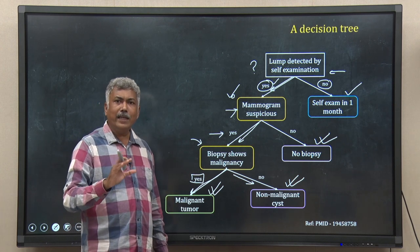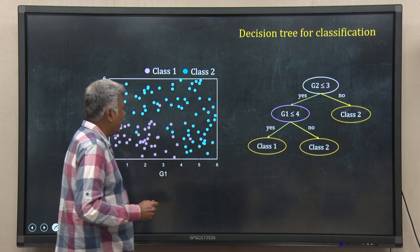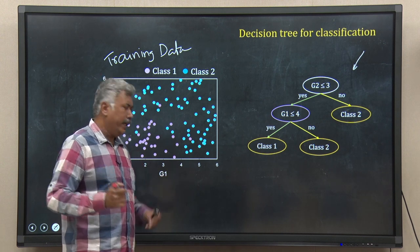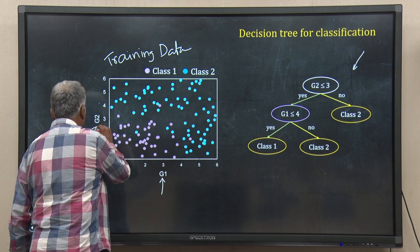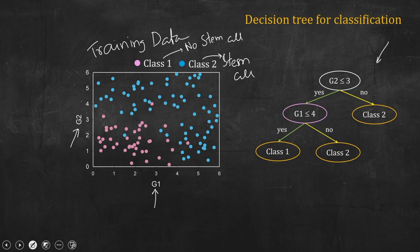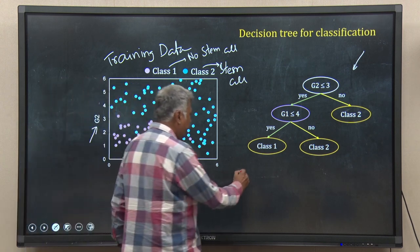Let us look into some data and the decision tree I have built based on that data. Remember, this data is a training data set. Here is my decision tree built using this training data. There are 2 predictors, G1 and G2 — imagine these are 2 genes which are markers for stem cells. I may have 2 classes: class 2 is stem cell and class 1 is no stem cell. The data distribution shows some patchy region but also a diffused region.